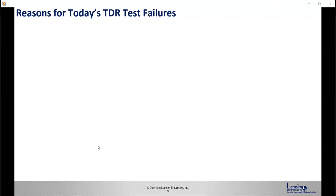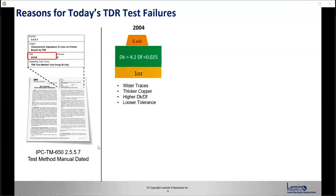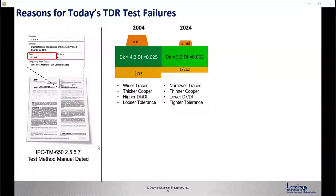Some reasons for today's TDR test failures include IPC-TM-650 2.5.5.7 test method. That manual is dated. The last update was back in 2004, which is 20 years ago. So back then we were dealing with wider traces, thicker copper, higher DK/DF and looser tolerances.